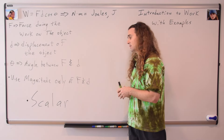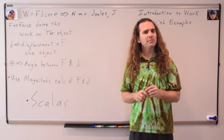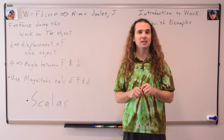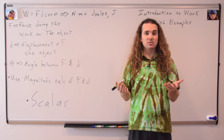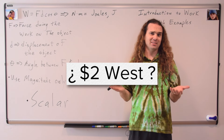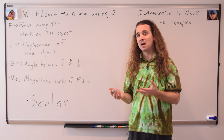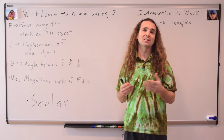Work is a scalar, therefore it does not have direction — it only has magnitude. Now, it is common for students to think that scalars cannot be negative, but this is not correct. Scalars can be negative. One good example for this is money. I think you would all agree that money is a scalar, right? Two dollars west just doesn't make any sense. Therefore, money is a scalar, and you can certainly have negative money. Most of us do. It is called debt.